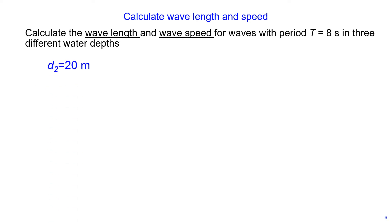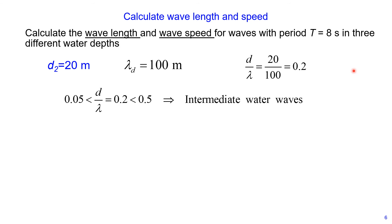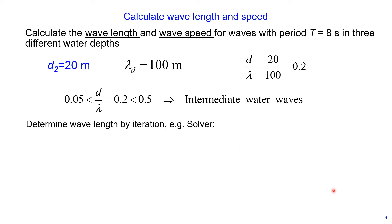The second water depth is 20 meters. Again, we start with the deep wavelength, which is 100 meters from the previous slide. Then we calculate the ratio of water depth by wavelength, and this is 0.2. We compare this ratio with 0.05 and 0.5, and 0.2 is between those two values. Therefore, we have intermediate water waves, and we solve the full wavelength equation by iteration, for example using the solver function in Excel. Below the video, I will post the link on how to use the solver function in Excel to calculate the wavelength.